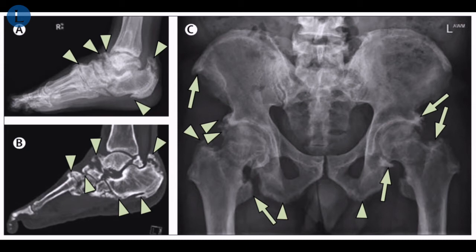Interestingly, the articular surfaces were relatively well preserved, which would not necessarily be expected in other forms of enthesopathy, namely with psoriatic arthritis.